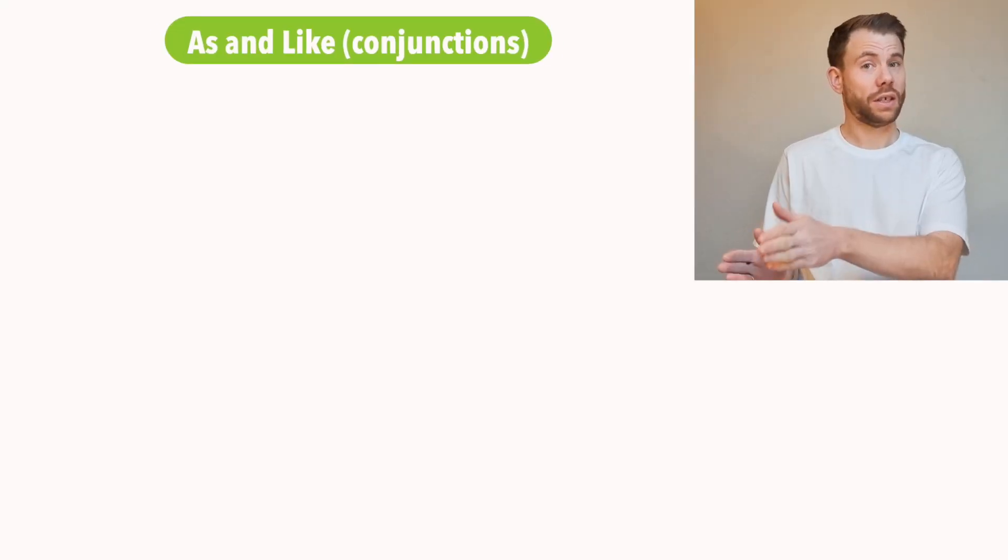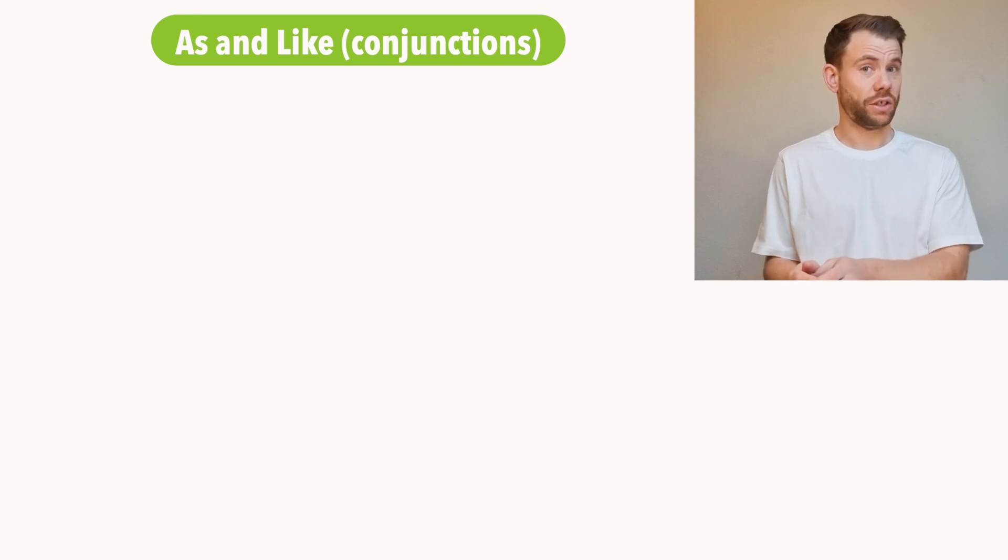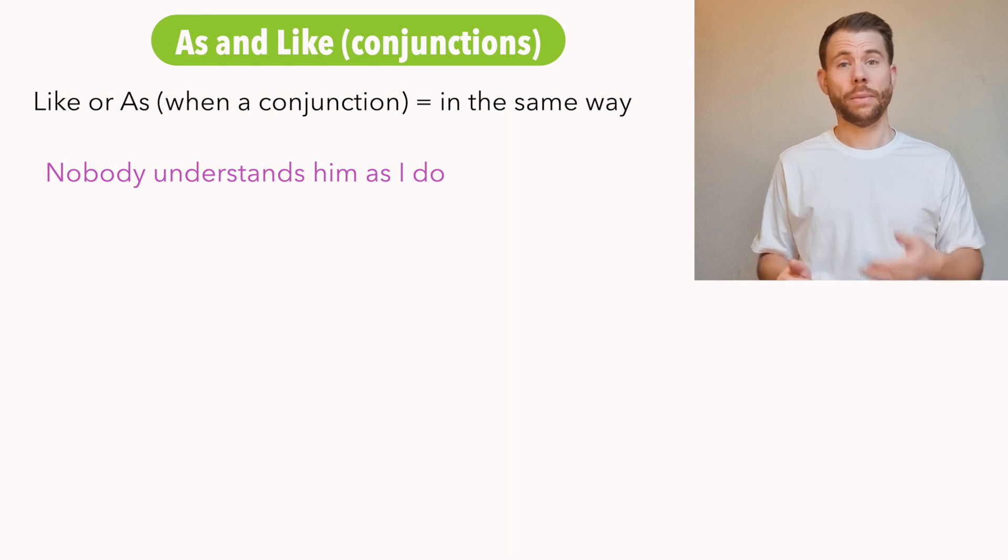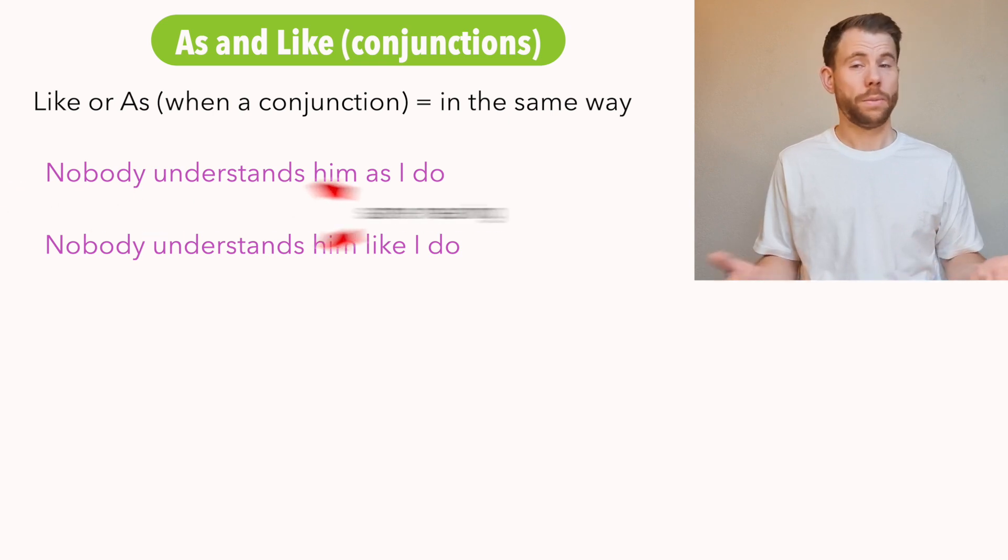Now if we're using like or as as conjunctions, so remember it's a conjunction if it's followed by a clause, which is a subject and then a verb, they have the same or a very similar meaning, which is in the same way. For example, nobody understands him as I do. I do, this is the clause. We know as is the conjunction here. If you compare this to nobody understands him like I do, the meaning is the same. These two are interchangeable.